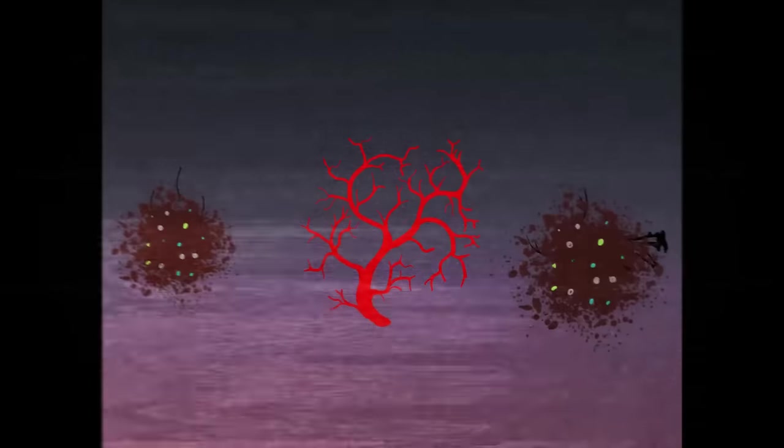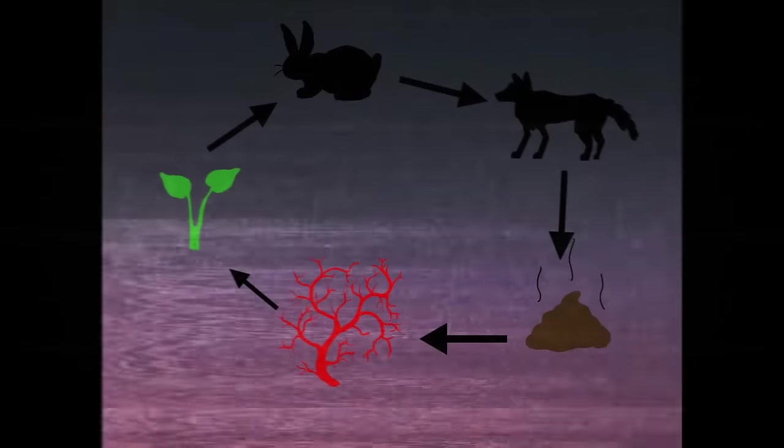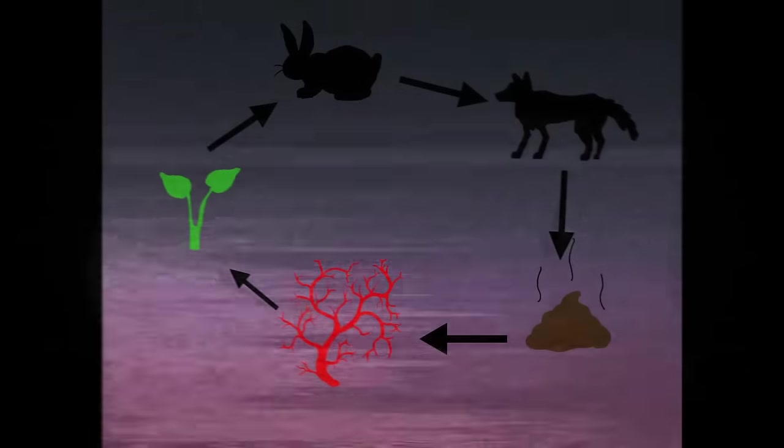The presence of all these animals leaves behind waste, which will be broken down and consumed by the crawl, and the cycle begins again. This form of symbiosis leads to an environment where all populations thrive.